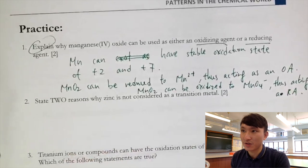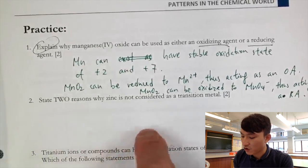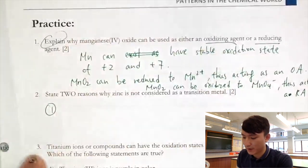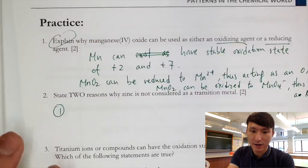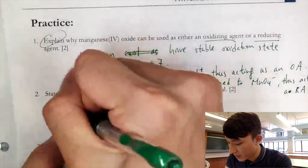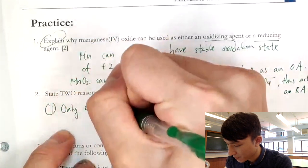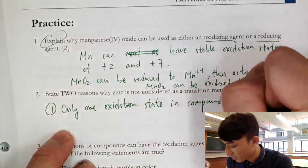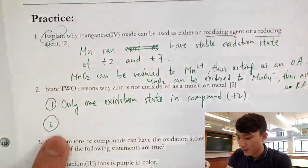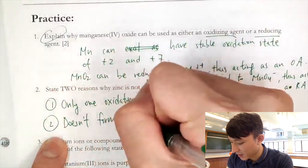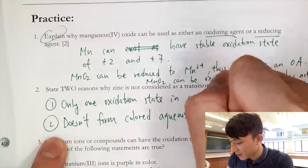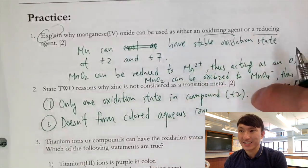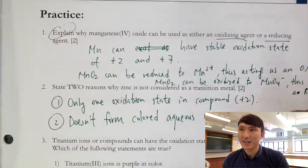Two reasons why zinc is not considered a transition metal: First, it has only one possible oxidation state in compounds (+2), but the definition requires two or more. Second, it does not form colored aqueous ions — Zn²⁺ is colorless, and this is the only aqueous ion it can form. Forming colored aqueous ions is a feature of transition metals.